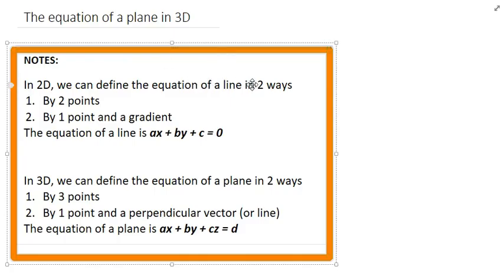In 2D we can define the equation of a line in two ways: using 2 points or 1 point and a gradient. The equation of a line is ax + by + c = 0. That's general form.